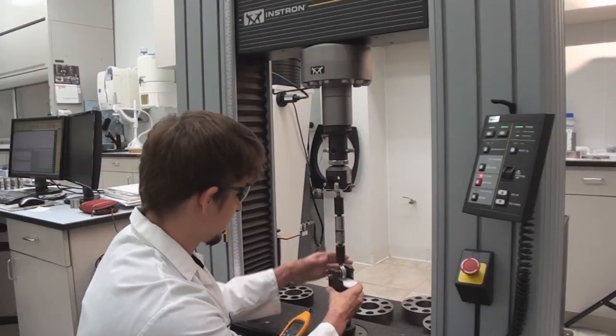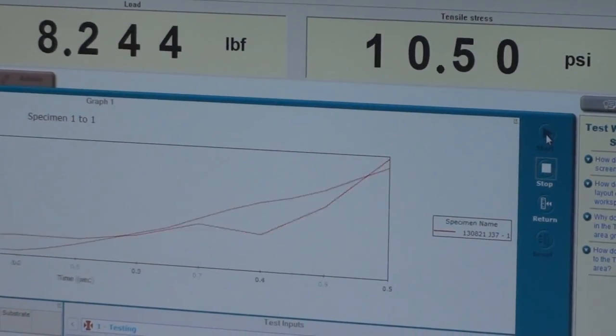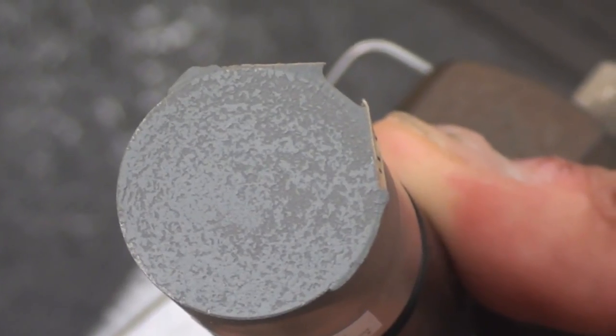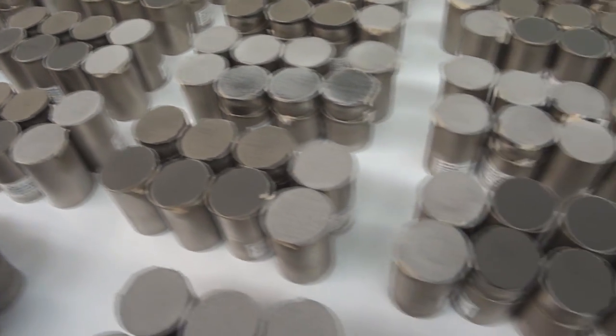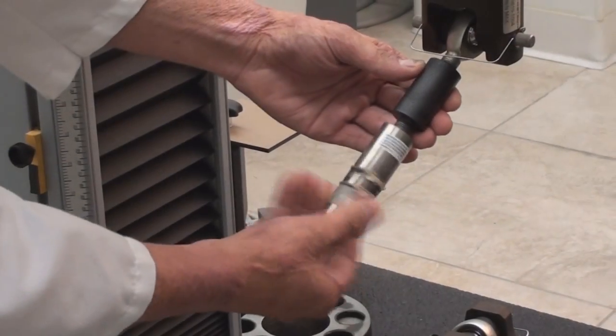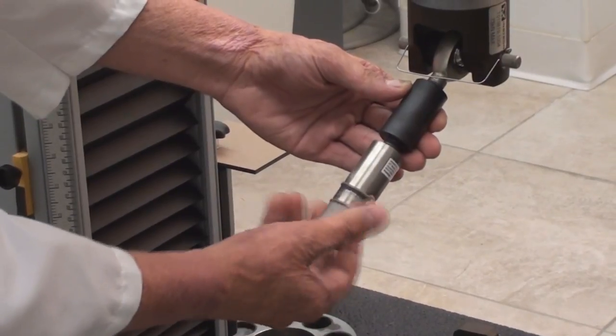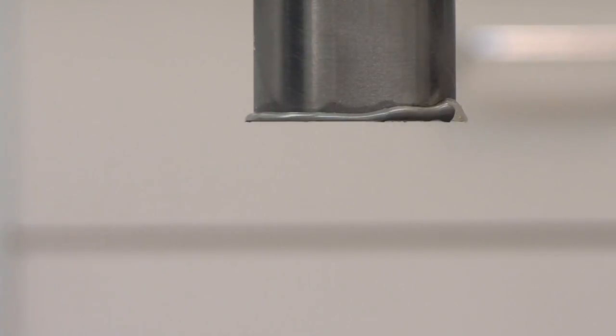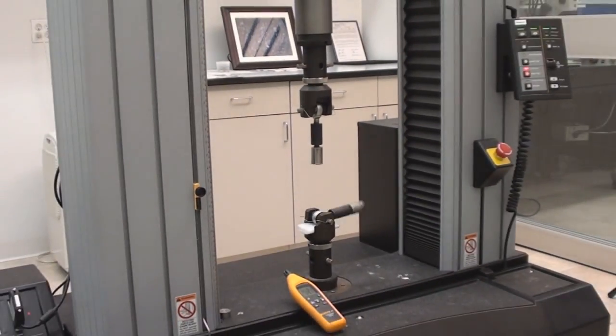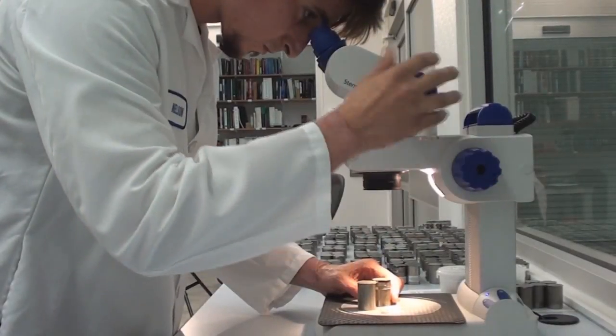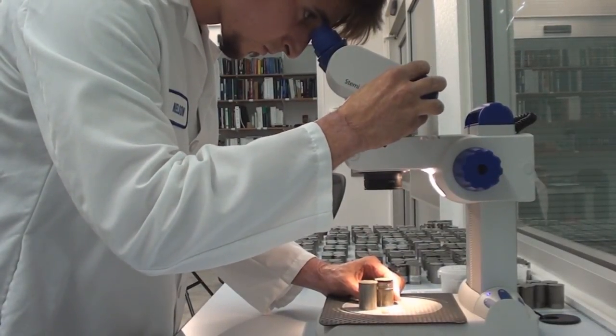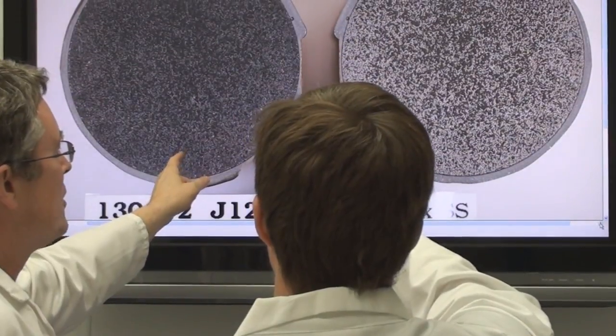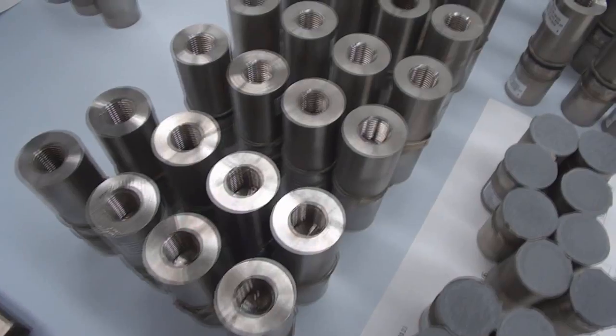The adhesion test allows us to quantify the adhesion strength of a coating to a substrate. A one-inch diameter cylindrical test piece is coated on one side and attached to a load fixture using a high-strength epoxy adhesive. The tensile load is then applied until the point of rupture. This test determines the maximum load force it took to separate the coating from the substrate and/or the epoxy. The result is the minimum adhesion or cohesion strength of a coating to a substrate, that is, unless the epoxy failed before the coating. This is one of the most important quality control tests we perform.